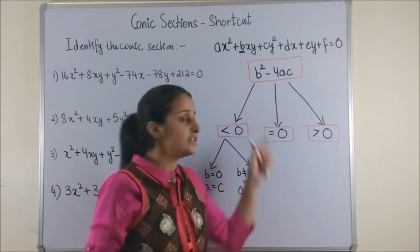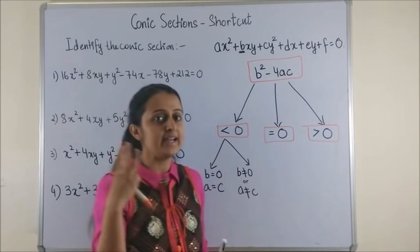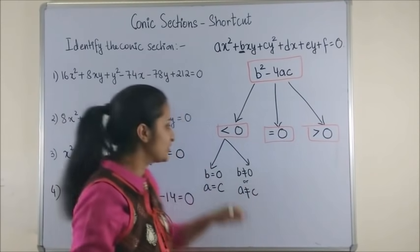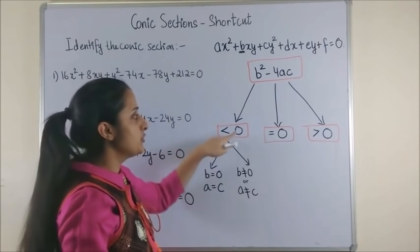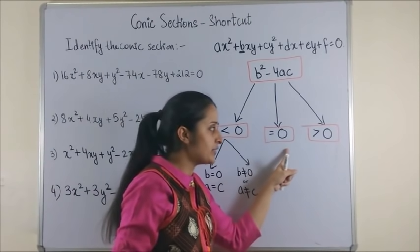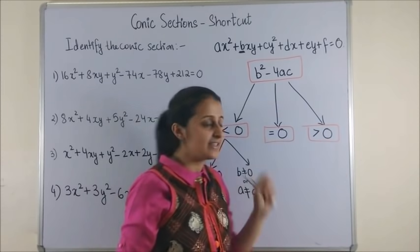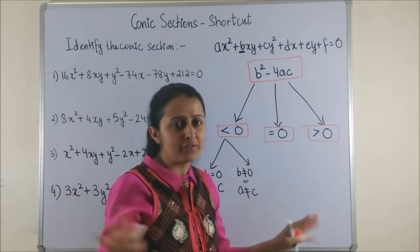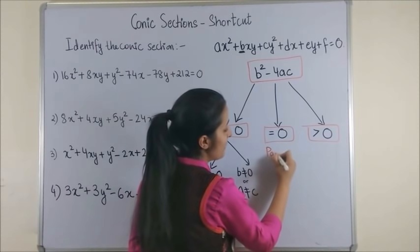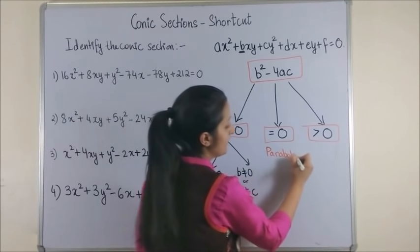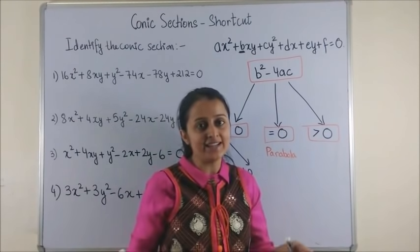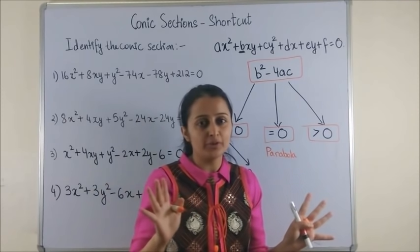So now the moment you find b² - 4ac, it gives rise to three situations. Number one, it could be less than 0, or equal to 0, or greater than 0. Well, if it is equal to 0, you don't have to think about anything—it is a parabola. If it is greater than 0, again don't put too many brains into it—it is a hyperbola.